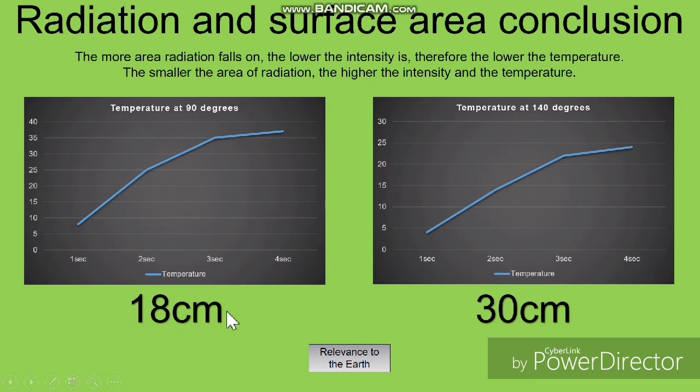The smaller the area, the more electromagnetic waves hit this area at the same time, thus more energy is transferred. The bigger the area, the less waves hit the area, so there will be less energy transfer and lower temperature.